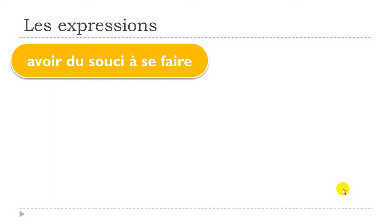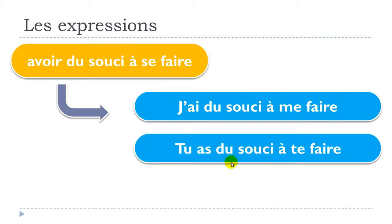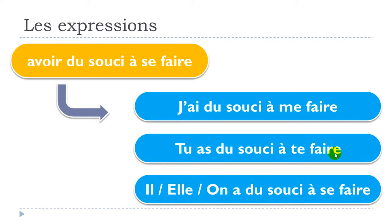For the first person: j'ai du souci à ME faire. For TU: tu as du souci à TE faire. For IL, ELLE, or ON: a du souci à SE faire. Keep in mind — ME for the first person, TE for the second, and SE for the third person singular.